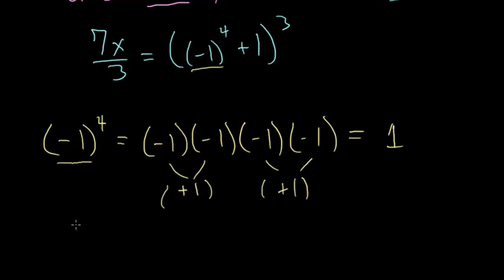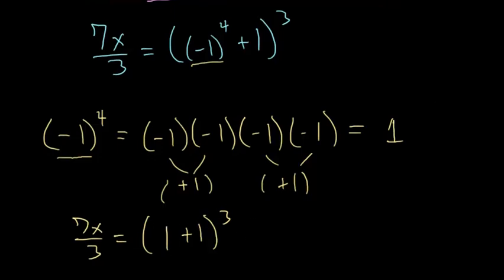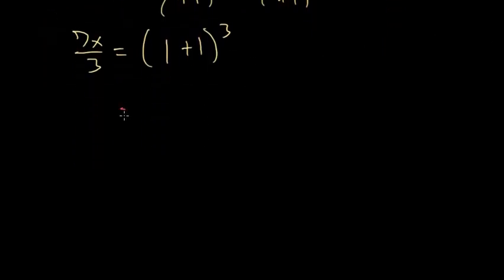Rewriting the equation with this new knowledge we have 1 plus 1 all raised to the third power. Now this right-hand side 1 plus 1 can be simplified to 2 which we have to cube. So 7x over 3 is equal to 2 cubed, and in other words 7x over 3 is equal to 8 since 2 to the third is just 2 times 2 times 2.